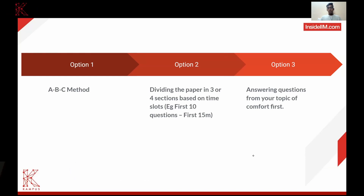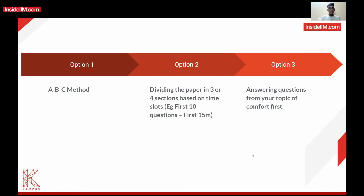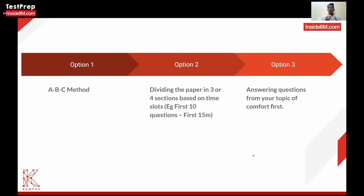The second approach is dividing the questions into three or four sections based on your preferences. For example, if you divide the 22-question paper into three sets — seven questions, seven questions, and eight questions — then for the first 12 to 13 minutes you solve only the first set, in the next 12 to 13 minutes only the second set, and in the last 14 to 15 minutes only the last eight questions.